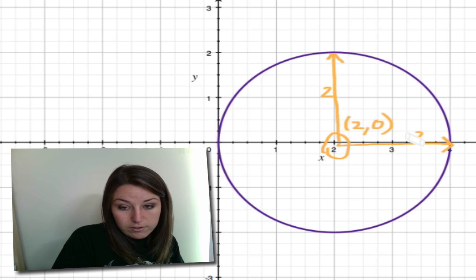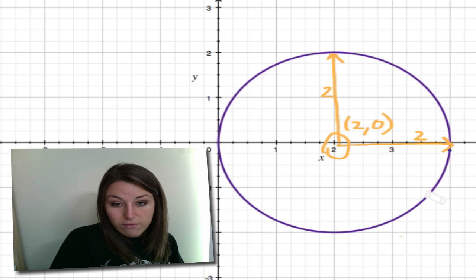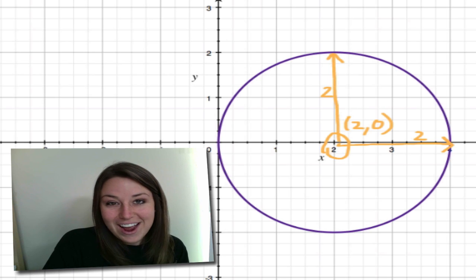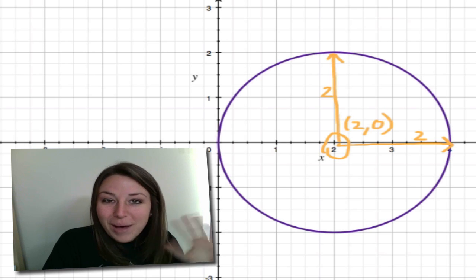And the radius is 2. So that's what the graph of this particular circle looks like: center at 2, 0 and radius 2. So anyway, I hope that video helped you guys, and I will see you in the next one.